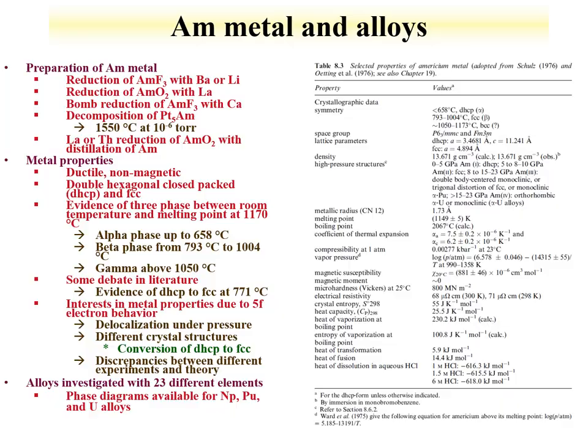Important compounds of americium for the nuclear fuel cycle start with the metal and the alloys. Americium metal can be produced by a number of reduction reactions, starting with the fluoride with liquid barium or lithium. The oxide can also be formed with a lanthanum species. There are also other reduction routes available. Once the metal is formed, three phases can be formed, and the higher-temperature body-centered cubic phase is subject to some debate in the literature regarding its exact nature.